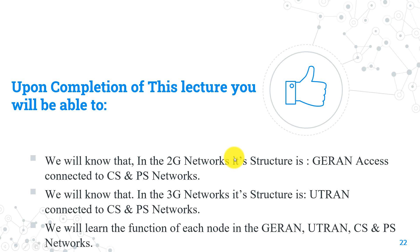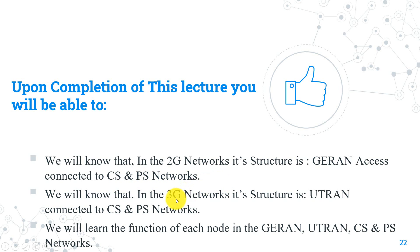Upon completion of this lecture, you will know that the structure of any 2G network consists of GERAN access connected to either CS Core for voice or PS Core for data sessions. While 3G networks consist of UTRAN access connected to CS Core for voice and PS Core for data sessions. We will learn the function of each node in those network parts in detail.